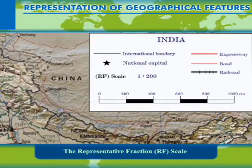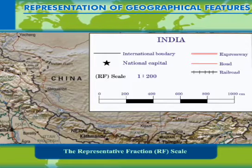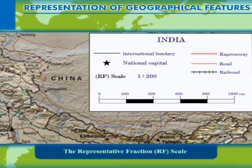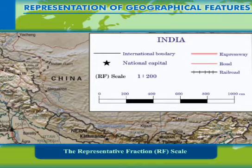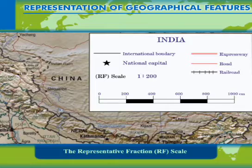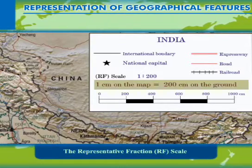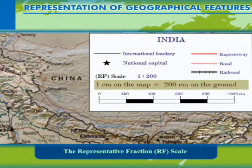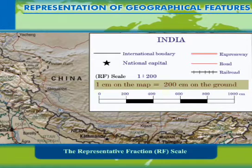The representative fraction scale (RF) overcomes this disadvantage of the statement scale. The RF is given as a ratio of the distance on the map taken as unity to the corresponding distance on the ground, where both values have the same unit and therefore no unit is written. For example, 1:200 means 1 cm on the map is equal to 200 cm on the ground.